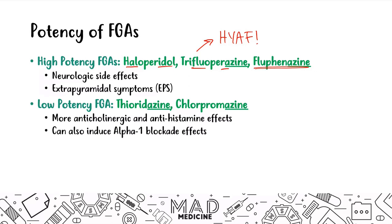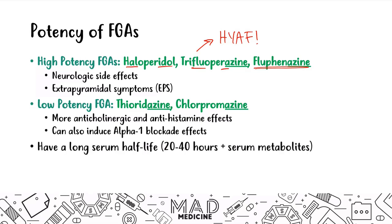All first-gen antipsychotics have a long serum half-life of about 20 to 40 hours, and their serum metabolites remain active. These drugs are highly lipophilic and are often stored in body fat, so be careful when prescribing to an overweight patient, as drug metabolites stored in fat may produce more adverse effects than desired.